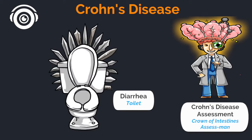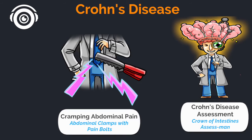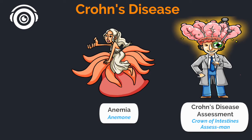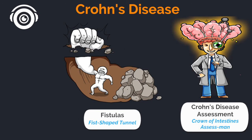So let's review the important differences between Crohn's disease and ulcerative colitis. In Crohn's disease, diarrhea — just regular old diarrhea — and you can see 5 to 6 stools per day. Of course you're going to see cramping abdominal pain. You may see malabsorption, which could lead to anemia. Complications of Crohn's disease could lead to obstruction or the development of fistulas.